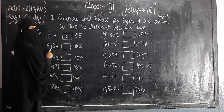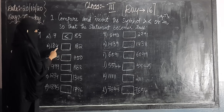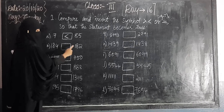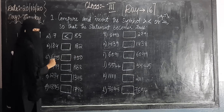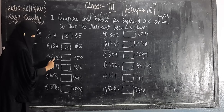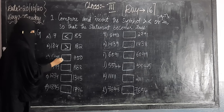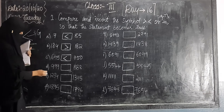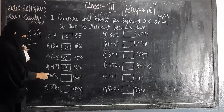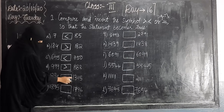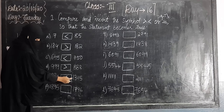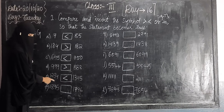Here: 184 and 182. Both are three-digit numbers in the hundreds place. First digit: one and one — same. Second digit: eight and eight — same. Third digit: four here and two here — so which is smallest? 182. So insert less than sign. Next: 645 and 750 — seven hundred and fifty is the biggest, insert greater than. Next: 999 and 888 — 999 is biggest. Next: 1345 and 1234 — four digits each, first digit same, second digit three versus two — 1345 is bigger.